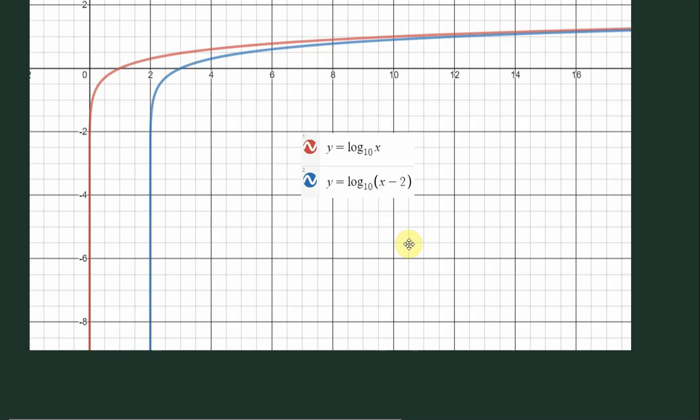As you know, if you subtract 2 from x, if you subtract any real number from x, that will result in shifting to the right.